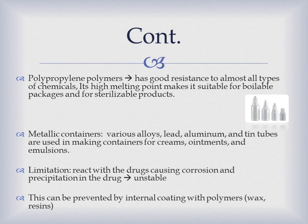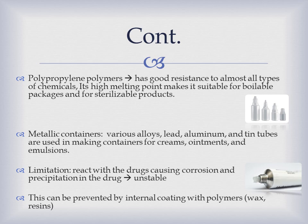Polypropylene polymers have good resistance to all types of chemicals with high melting points, allowing them to be used in sterilizable products. Metallic containers, like various alloys, lead, aluminum, and tin — which is the most inert and most expensive one — are used in making creams, ointments, and emulsion tubes, but they have some limitations as they can react with the drug itself, causing precipitation and corrosion affecting its stability.